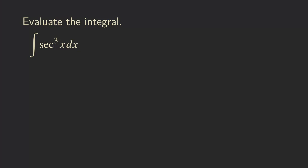Usually the strategy for integrating the product of powers of secant and tangent is that we look for an even power of secant or an odd power of tangent. If you look at this one, we have an odd power of secant. What about the tangent? Because the tangent is not present here, we assume the power for the tangent is zero, so that's an even power of tangent. So it's not really one of those two cases. Those two cases that allow us to use U-sub would be the even power of secant or the odd power of tangent, and this problem does not fit into any of those cases.